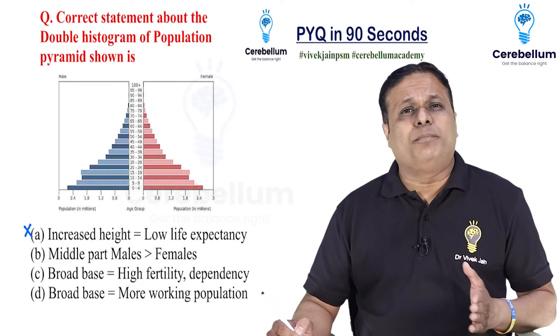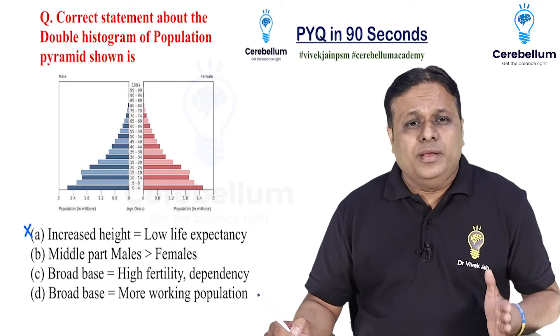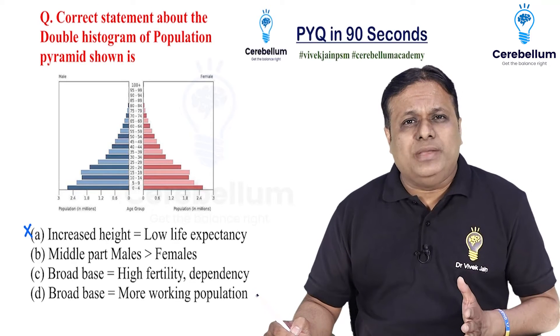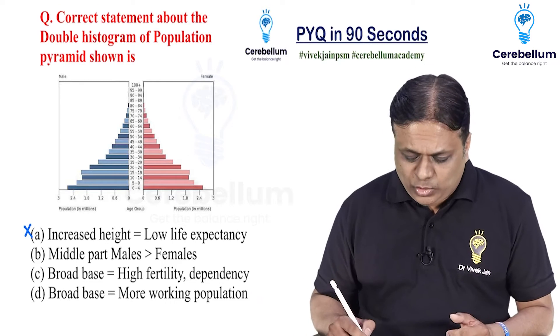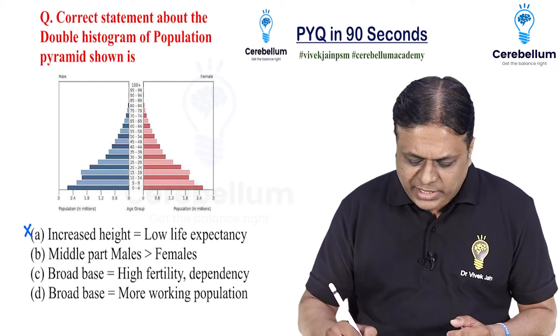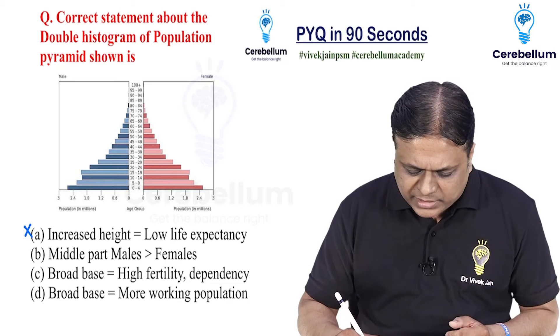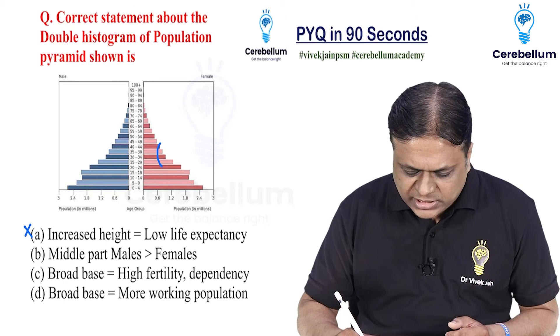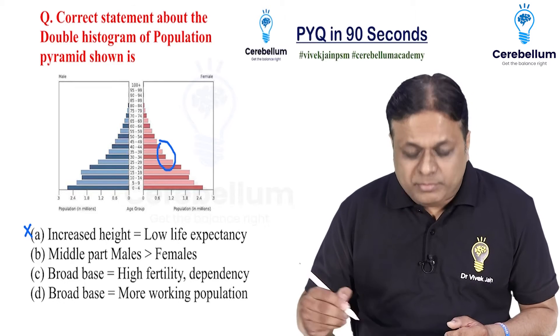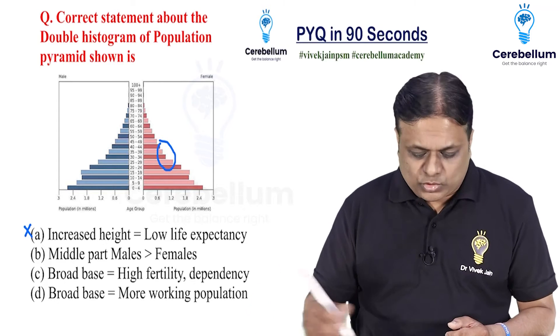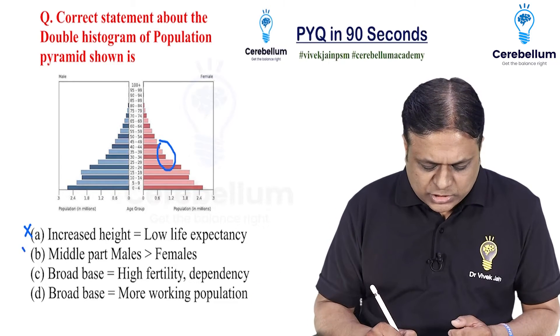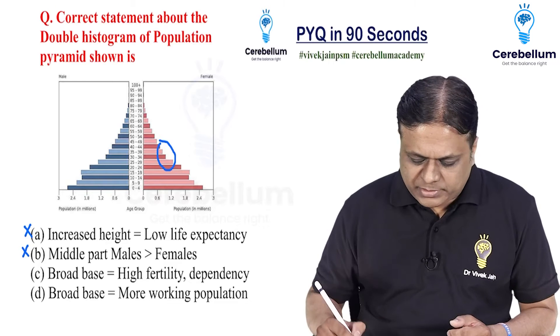Look at choice number B. It says the middle part — males is more than females. No, look carefully. In the middle part you can see females are rather more. So this is also a false statement.